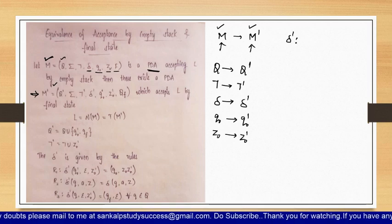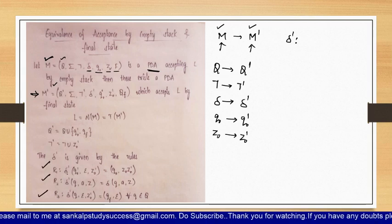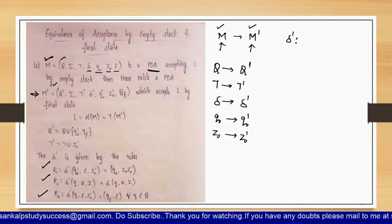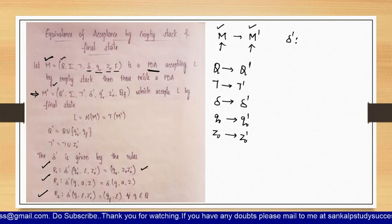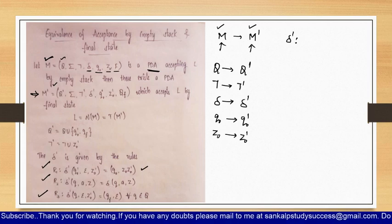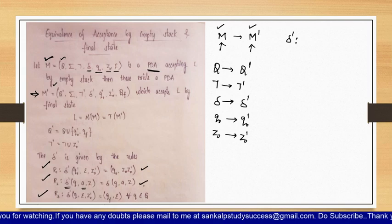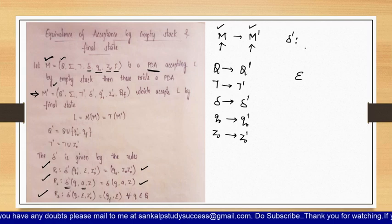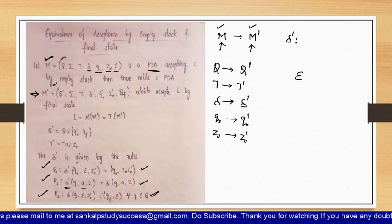Now let us define the transition function dash, which maps according to three rules. According to Rule 1, Rule 2, and Rule 3 we are going to construct the pushdown automata accepted by final state. Rule 1 maps: delta-dash of (Q-naught-dash, epsilon, Z-naught-dash) equals (Q-naught, Z-naught, Z-naught-dash). Rule 2 maps: delta-dash of (q, a, z) equals delta of (q, a, z), applicable for any state with any input symbol.